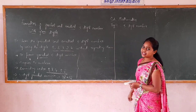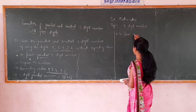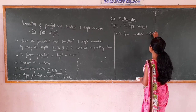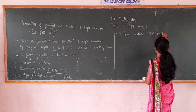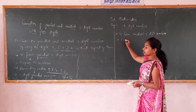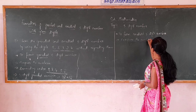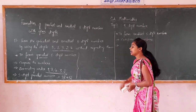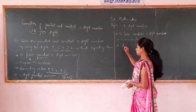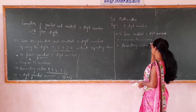Next, we find the smallest 5-digit number using the same digits. We follow these steps: first, compare the numbers; then write the numbers in ascending order. Ascending order means smallest to greatest number.